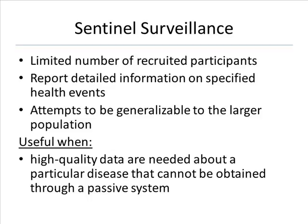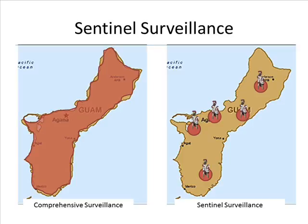Sentinel surveillance attempts to be generalizable to the larger population. It is useful when high-quality data are needed about a particular disease that cannot be obtained through a passive system. Slide 25: Comprehensive surveillance works around the entire territory, while sentinel surveillance is focused on strategical units — they have sentinels around the island.